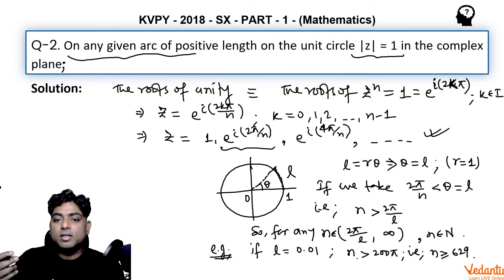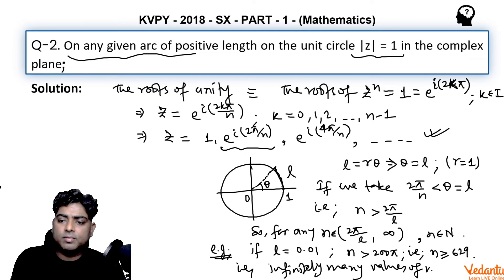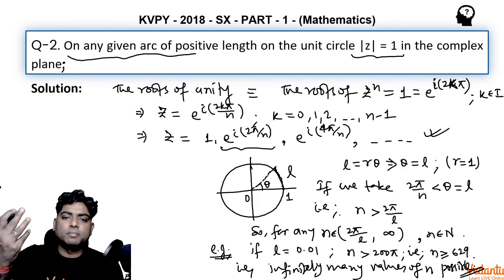You will get a root of unity falling on that arc of length 0.01. So the answer to this question must be there are infinitely many values—infinitely many values of n possible. So correspondingly, infinitely many roots of unity will fall. For n equal to 629, the root of unity will fall on this arc. For n equal to 630, for n equal to 631, corresponding to the arc length given to be 0.01. Similarly, for any given arc length, there would be infinitely many values of n corresponding to which the roots of unity will fall upon this taken arc.